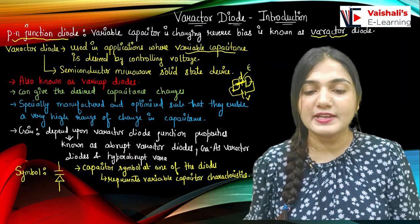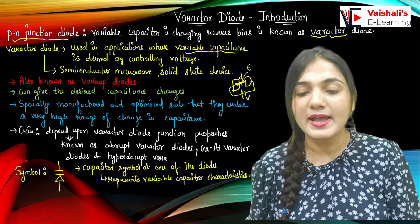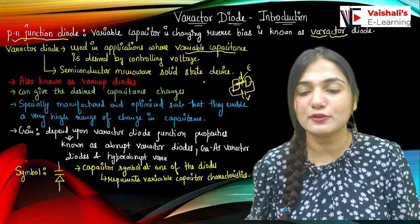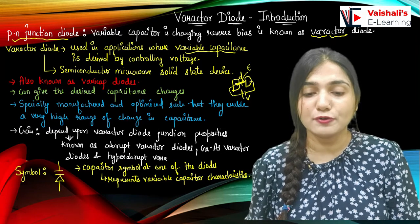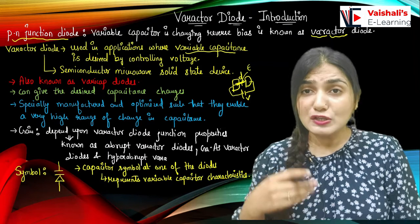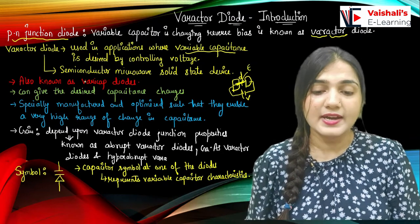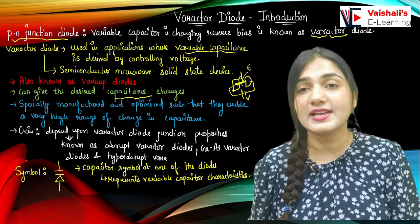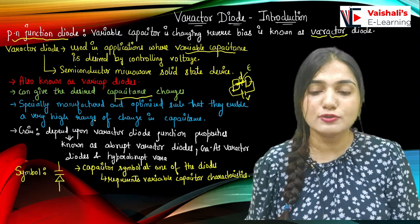We will use the varactor diode, also called the varicap diode. It is also called a semiconductor microwave solid-state device because it operates in the microwave region. 'Varicap' — 'vari' means variable, 'cap' means capacitance — so the varactor diode and the varicap diode are the same thing. It can give desired capacitance changes as we change the voltage.